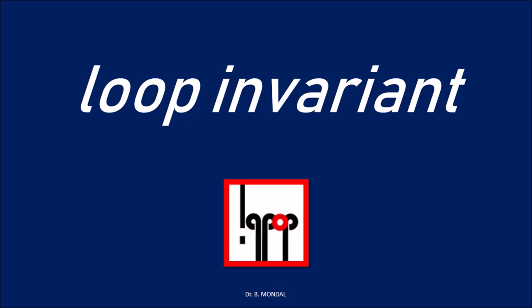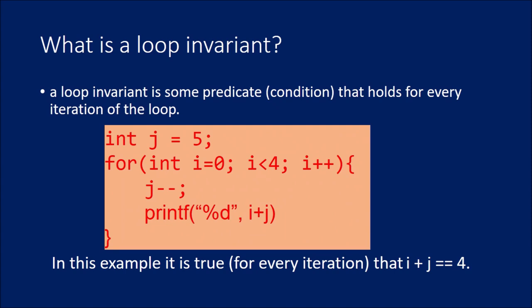Numbers of time we face this question, what is loop invariant? A loop invariant is some predicate or condition that holds for every iteration of the loop. Or you can say some condition which is true in every iteration of a loop.